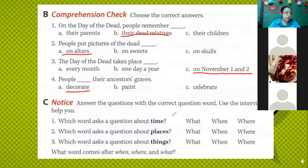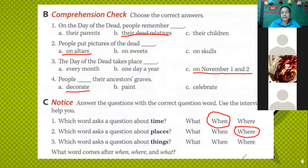Notice the specific WH word we use. When you ask about time, you use 'when.' When you need to know about places, you use 'where.' And for things, you use 'what.' Remember, 'where' is only for places. For example: 'When do you get up?' — I get up at 7 a.m. 'Where do you study?' — I study at El Camino School. 'What are the school supplies that you have?' — I have a pen, color markers, et cetera.